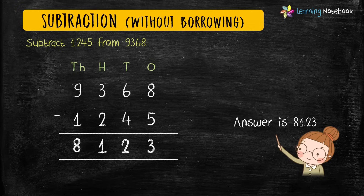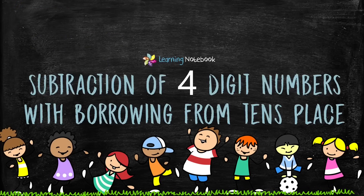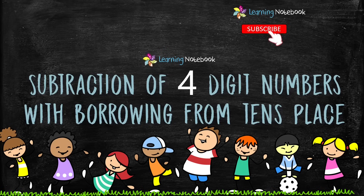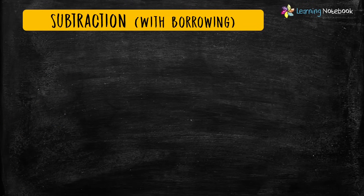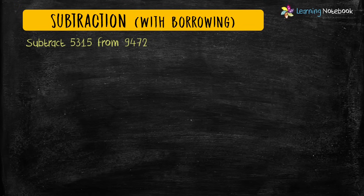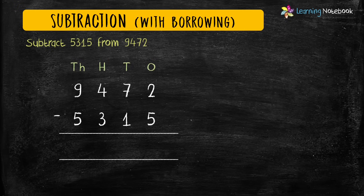So our answer is 8123. This is how we do subtraction of four-digit numbers without borrowing. Now let's learn subtraction of four-digit numbers with borrowing from tens place. The question is: subtract 5315 from 9472. Let's write them in columns and subtract the digits at ones place.